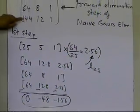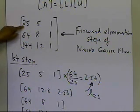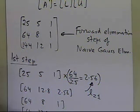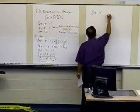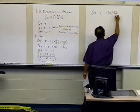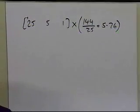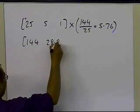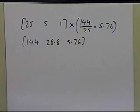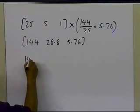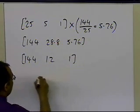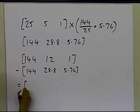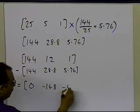To make the third row, first column equal to zero, I divide the first row by 25 and multiply by 144, giving a multiplier of 5.76. Multiplying the first row (25, 5, 1) by 5.76 gives 144, 28.8, and 5.76. Subtracting this from the third row (144, 12, 1) gives 0, minus 16.8, and minus 4.76. This multiplier 5.76 corresponds to the third row, first column of the lower triangular matrix.